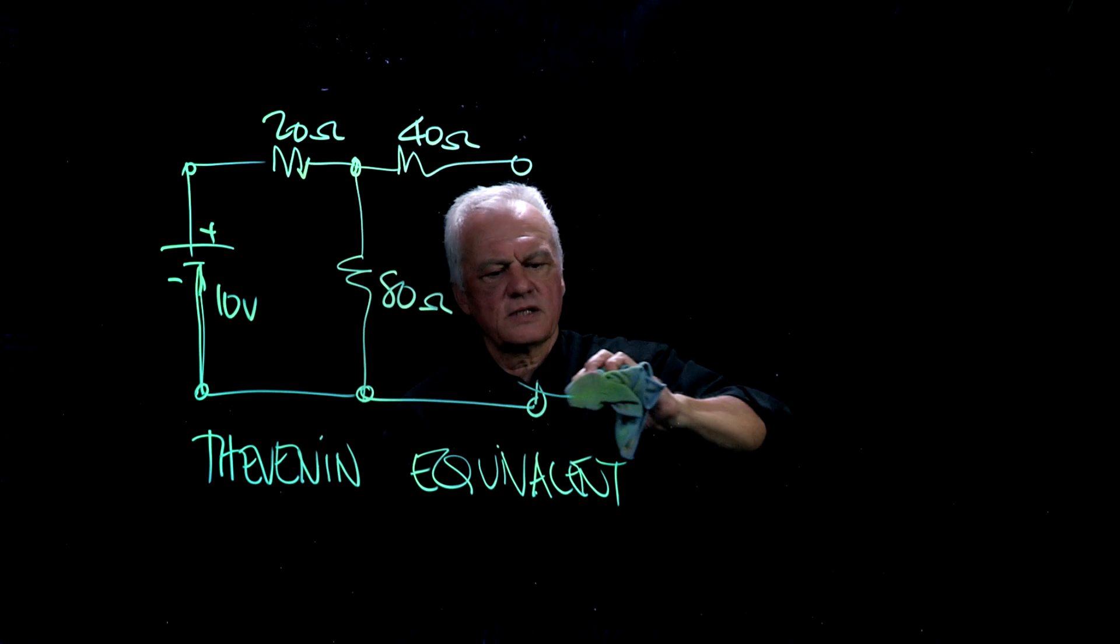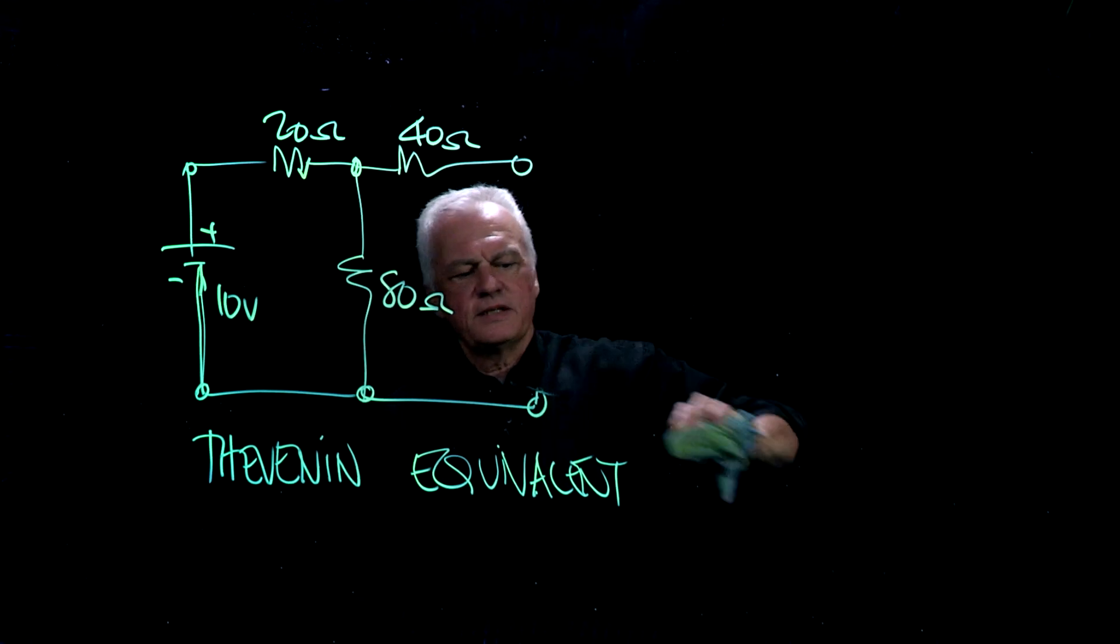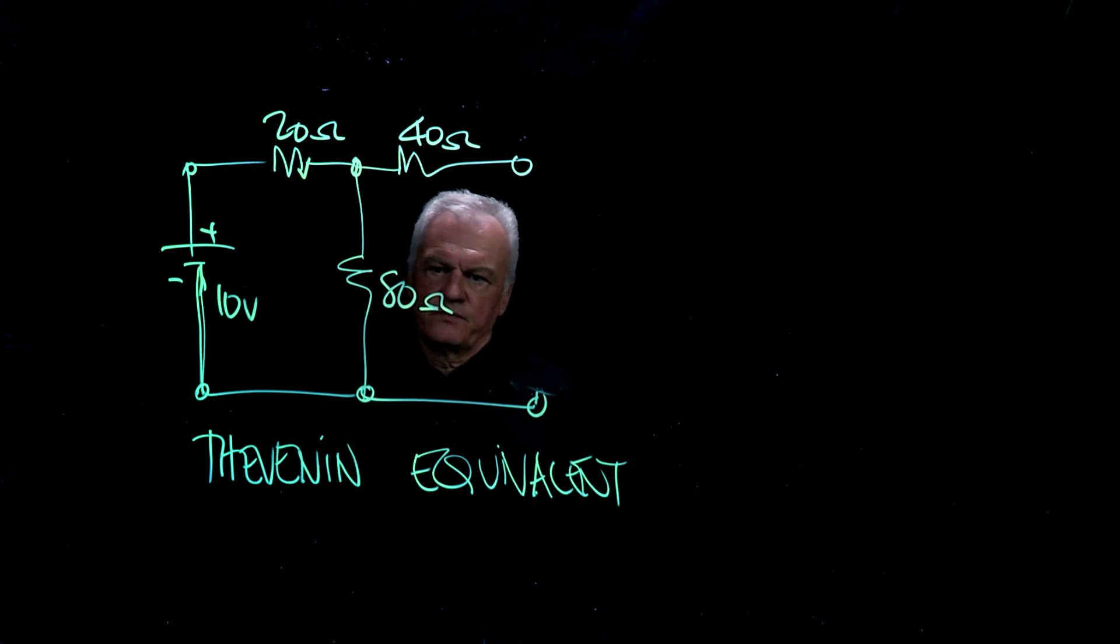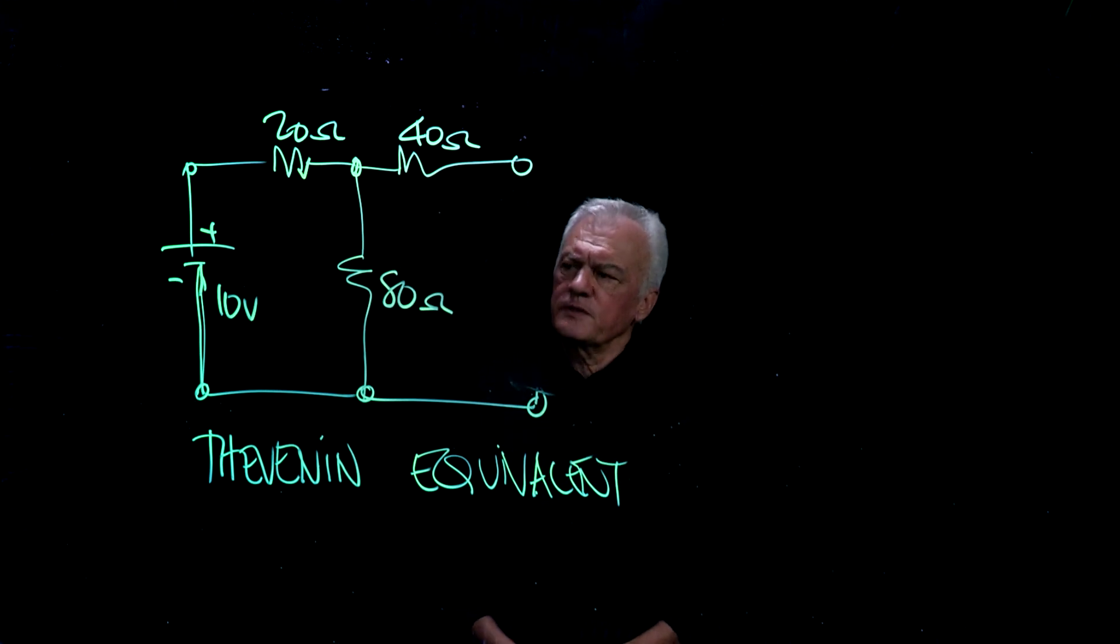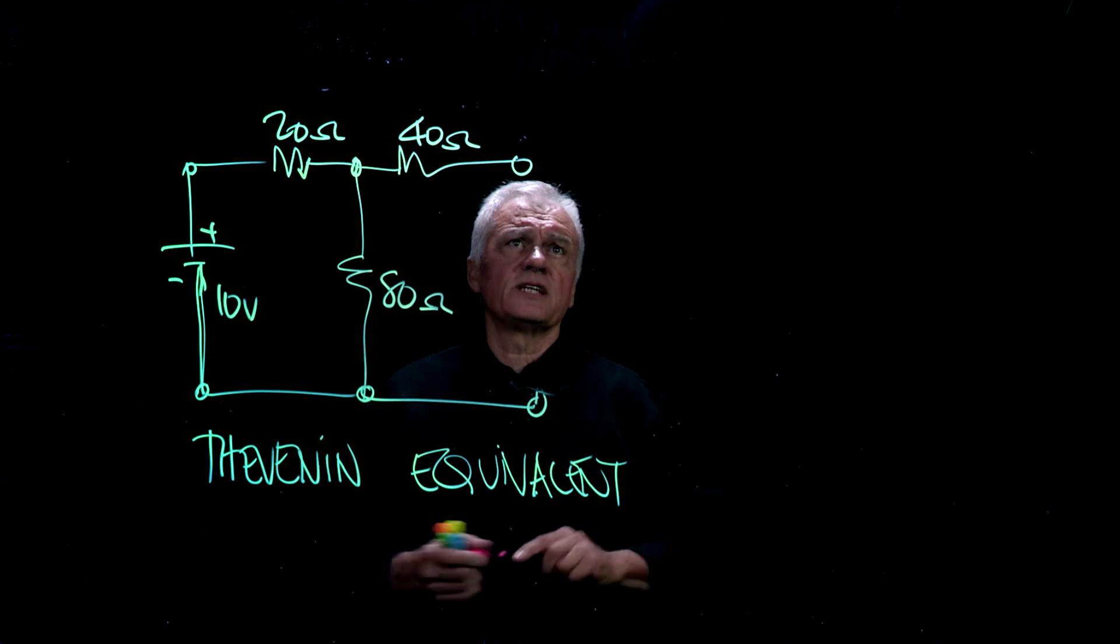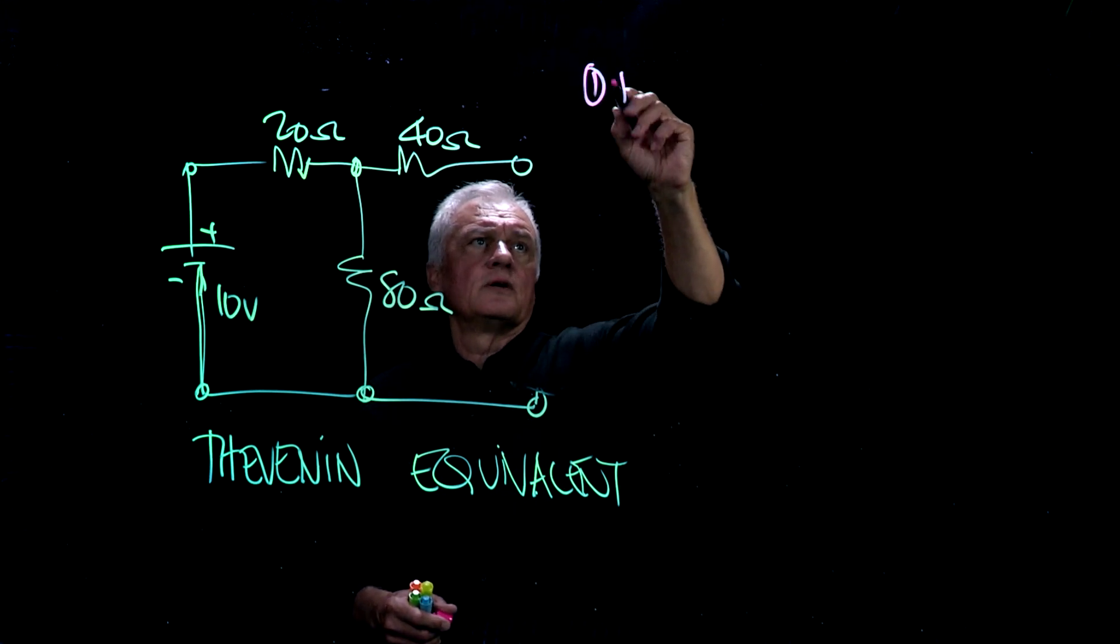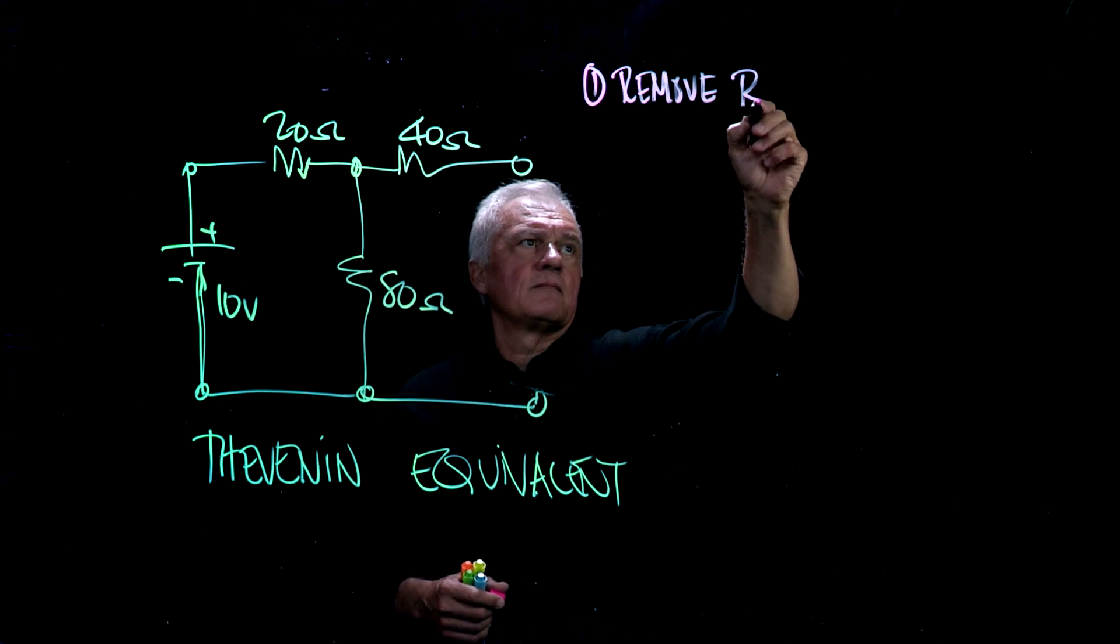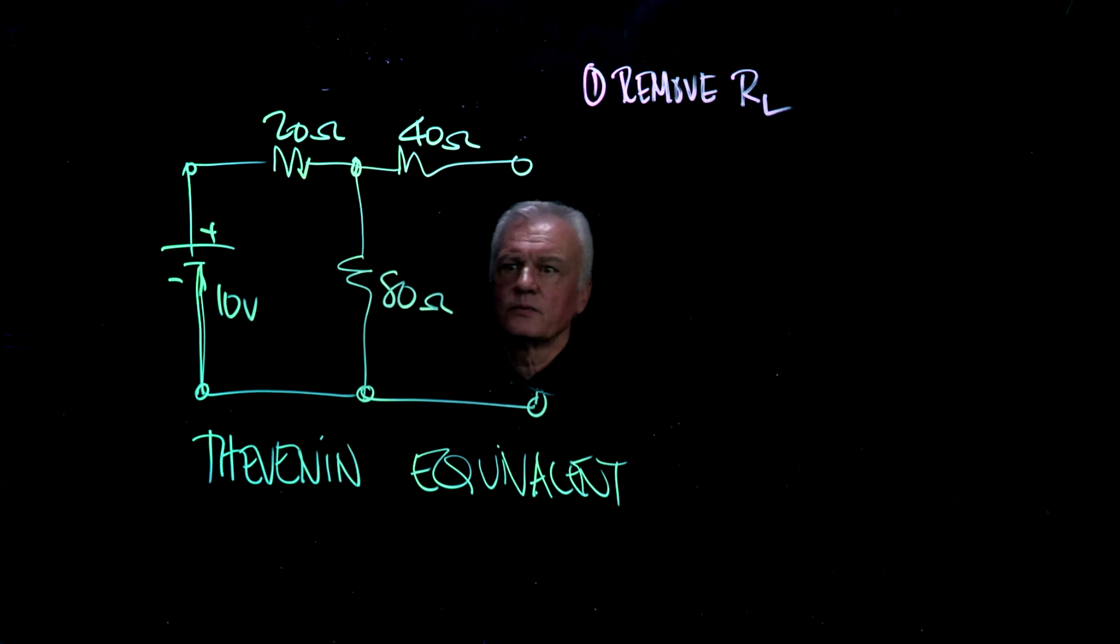Now we have a circuit that looks like this. It's not complete yet. We need to figure out what is the voltage that I'm looking at here, and what is the resistance that is in series with that particular voltage? So, the first thing Thevenin says is, let's just make these steps down here. Remove the load. We've done that.